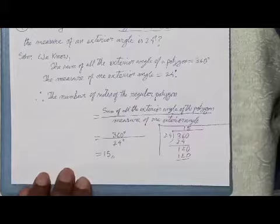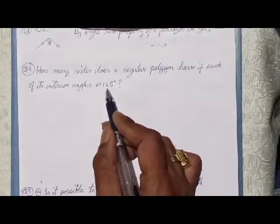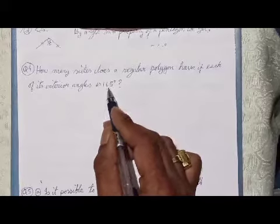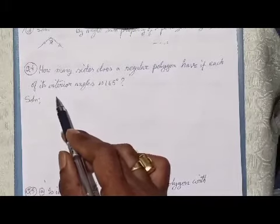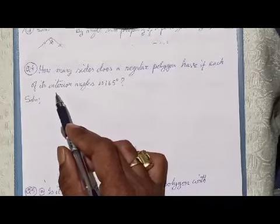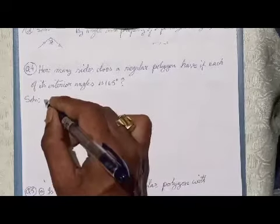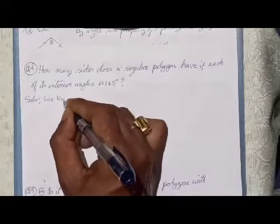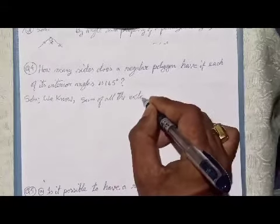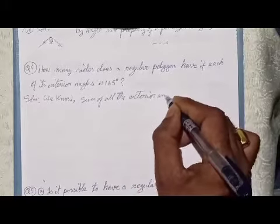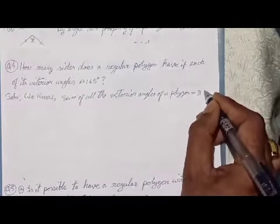Next is Question 4: How many sides does a regular polygon have if each of its interior angles is 165 degrees? This question is similar to Question 3. Solution: We know the sum of all exterior angles of a polygon is equal to 360 degrees.